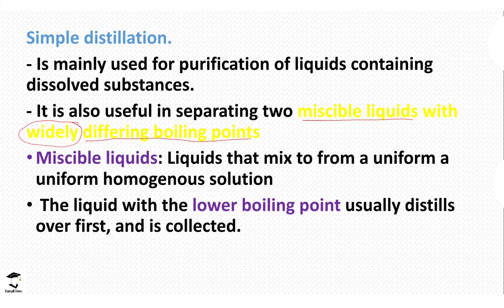In a liquid-liquid mixture, the one with a lower boiling point is usually the one that distills off first and is collected. Because of the two differing boiling points, the one with a very high boiling point will be left behind, and the one with the lower boiling point will distill off fast.